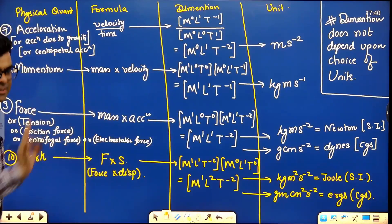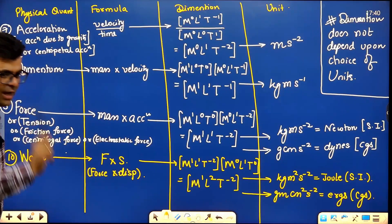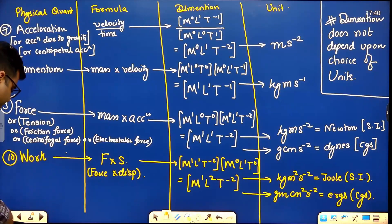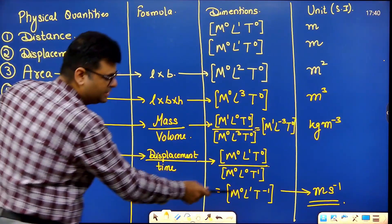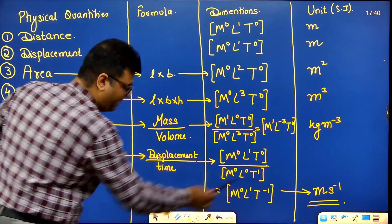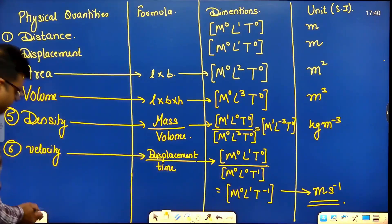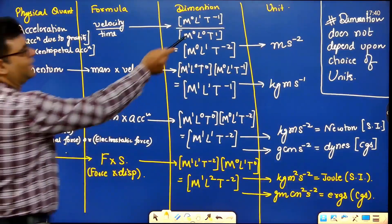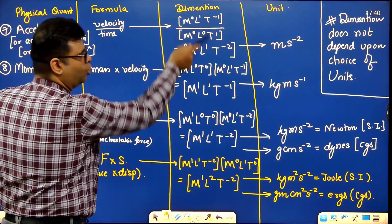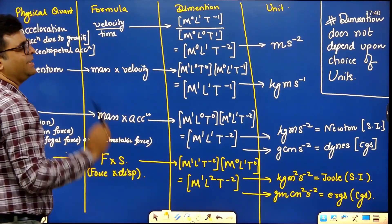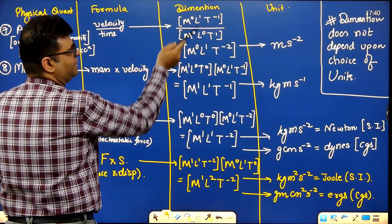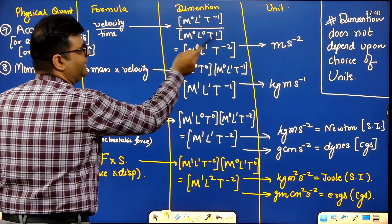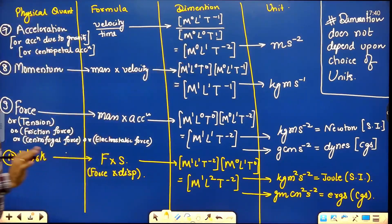Specifically for students who came for the first time: velocity was M⁰L¹T⁻¹ and time is T¹. When you divide both, base same so subtract powers: M power 0, L power 1, T power minus 2.